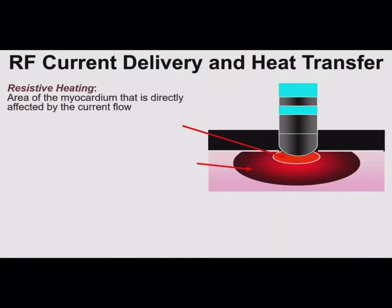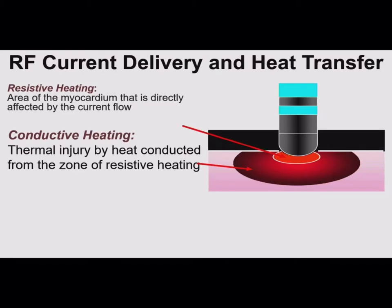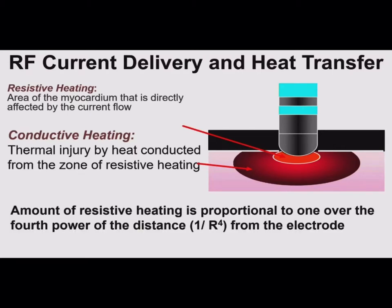When we ablate tissue, there are two types of heating. First, there's resistive heating — that is the myocardium directly in contact with the electrode, heated directly by the current flow. Then there is conductive heating, which is radiation of that central heat outwards from the zone of resistive heating. Resistive heating drops off very quickly — 1 over R to the fourth — so most of a conventional ablation lesion is formed by conductive heating out from a central source.